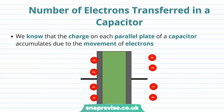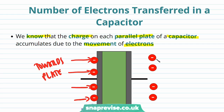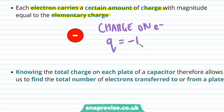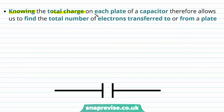We're now going to think about the number of electrons transferred in a capacitor. The charge on each parallel plate accumulates due to the movement of electrons — some electrons are moved towards a plate by potential difference, giving it a negative charge, and some are moved away from a plate, giving it a positive charge. Each electron carries charge with magnitude equal to the elementary charge, so the charge on an electron q = −1.6 × 10⁻¹⁹ coulombs.